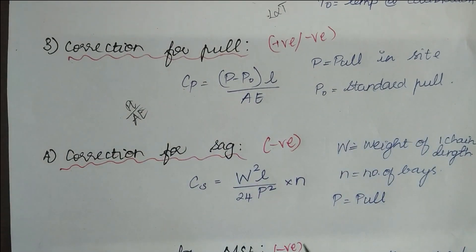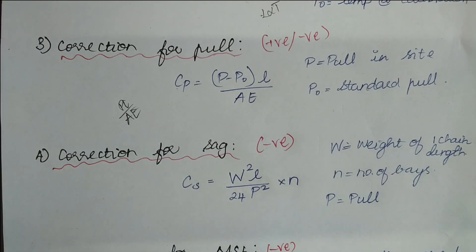The next is correction for sag and the correction for sag is always negative. The error is always positive, so the correction has to be always negative. The formula is W squared L divided by 24 P squared times N.